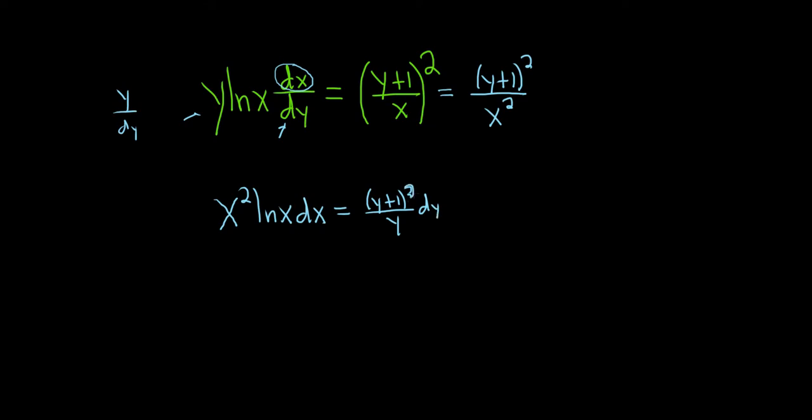So I did that all in one step, and eventually you'll be able to do it in one step also. So you could show more steps. I'll do it over here. So y ln x dx dy equals y plus 1 squared over x squared.